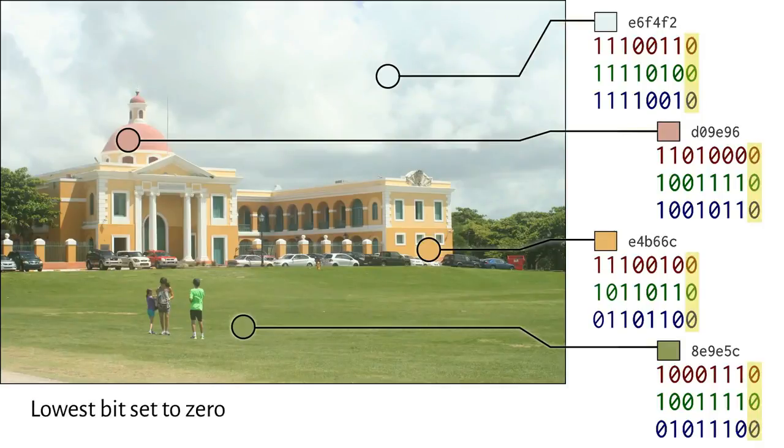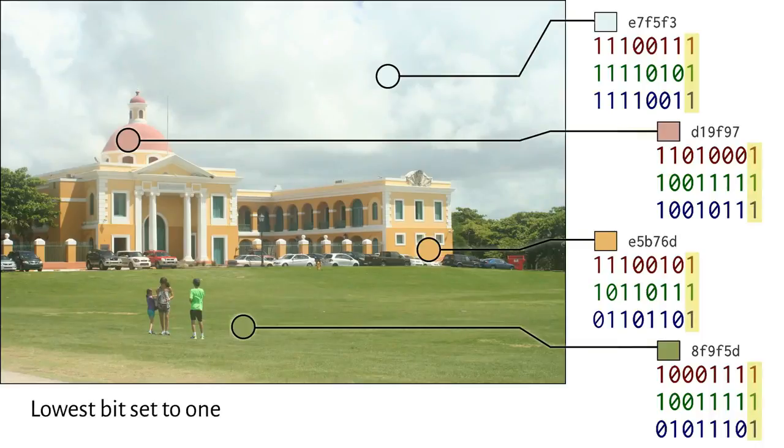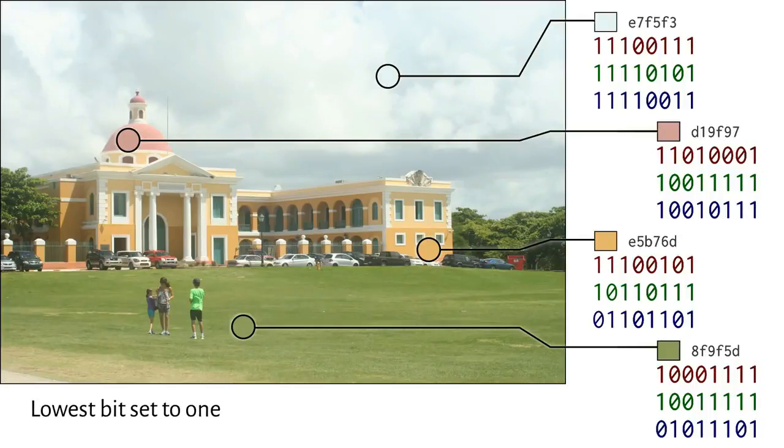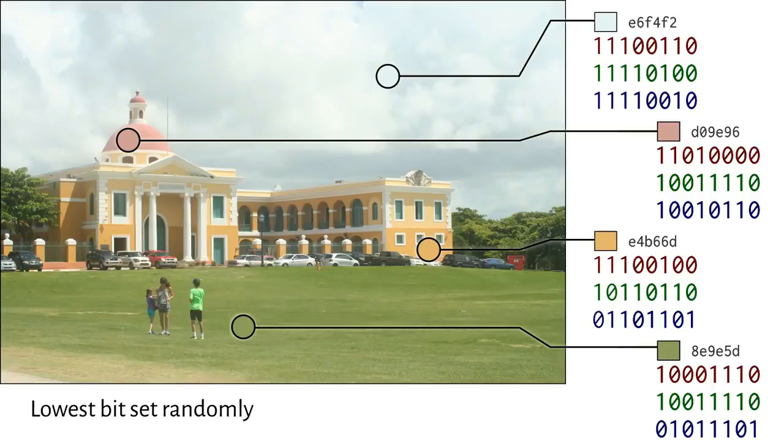If I set them all to zero, or all to one, or to random bits like flipping a coin for each one, the image doesn't appear to change very much at all. Let's see it again. I'm making these changes across the entire image, by the way, not just the four pixels, but all 1.2 million of them.